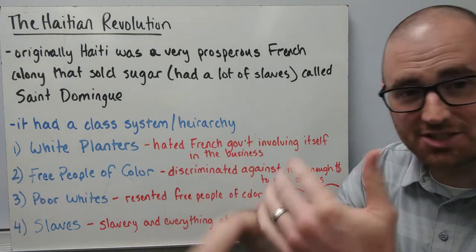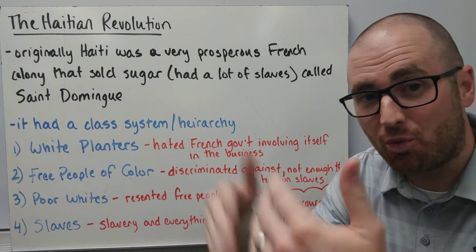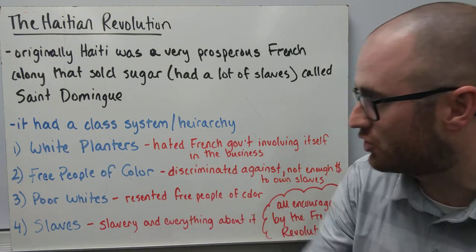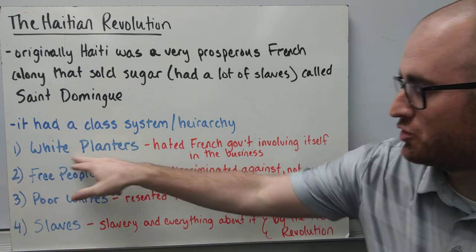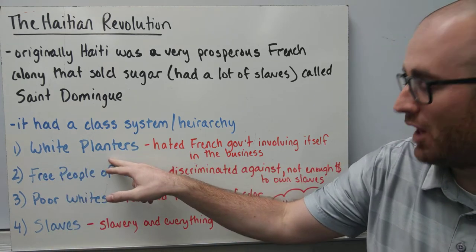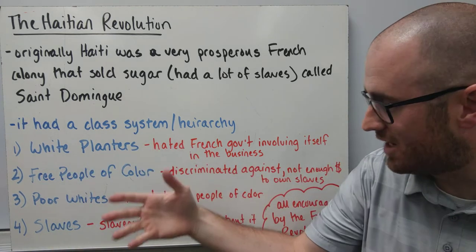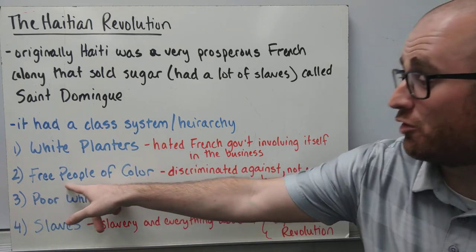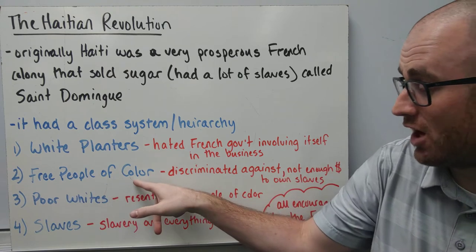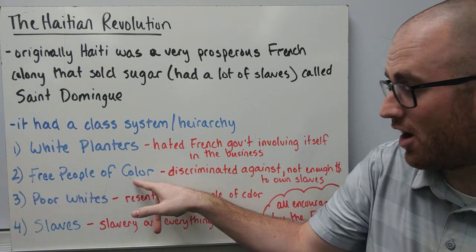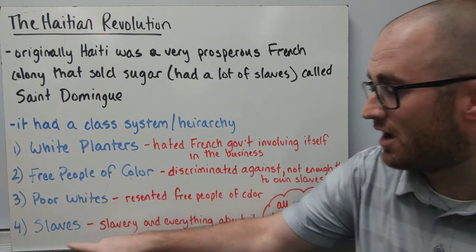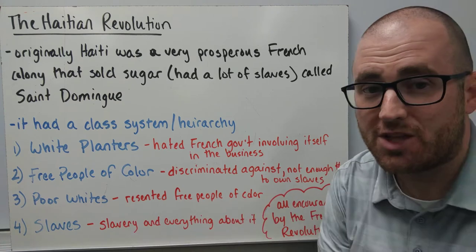San Domingo had a class system — a hierarchy — to structure the social classes. The first group were the white planters, the plantation owners. The second were the free people of color. The third were the poor whites, and the fourth were the slaves.